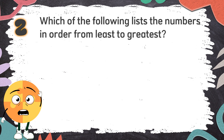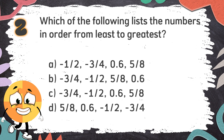Number 2: Which of the following lists the numbers in order from least to greatest? Again, which of the following lists the numbers in order from least to greatest? The choices are: A. negative 1 half, negative 3 fourths, 0.6, 5 eighths. B. negative 3 fourths, negative 1 half, 5 eighths, 0.6.